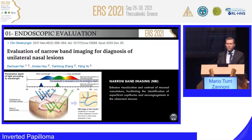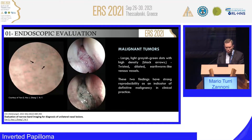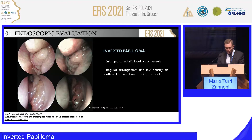Very recently, the introduction of bioendoscopy — which means NBI, narrow band imaging, or chromoendoscopy — can give additional information, because thanks to bioendoscopy you can identify superficial capillaries and neoangiogenesis in the abnormal mucosa. For example, this is a pattern specific to inflammatory lesion where edematous mucosa has reduced vascular density. This is a pattern of malignant tumor with dotted vessels specific for cancer. And this is the pattern specific for inverted papilloma. Of course, sure diagnosis requires biopsy and histological exam.